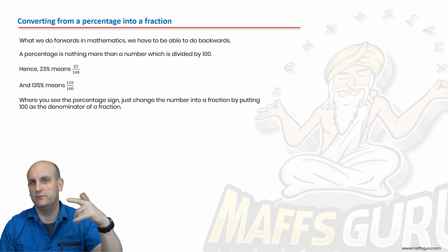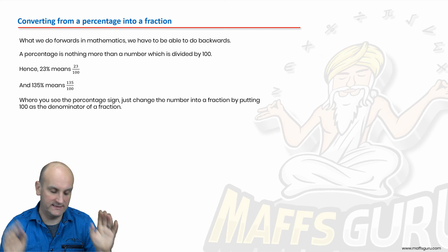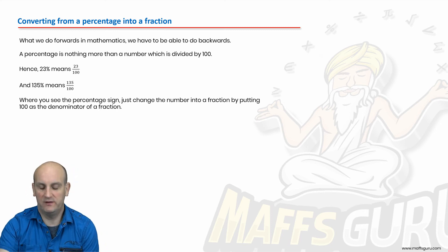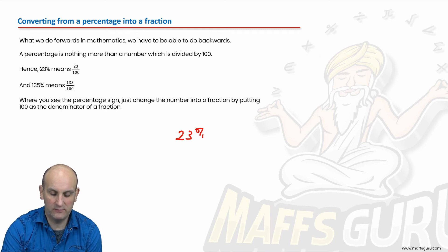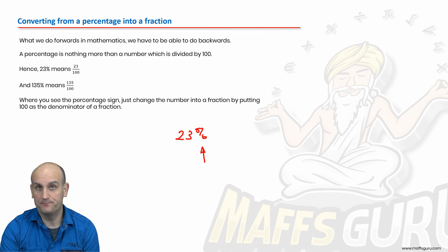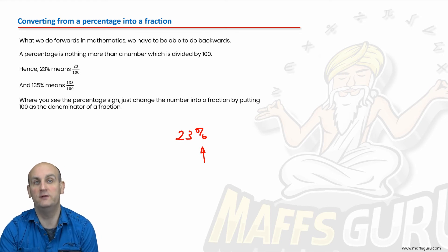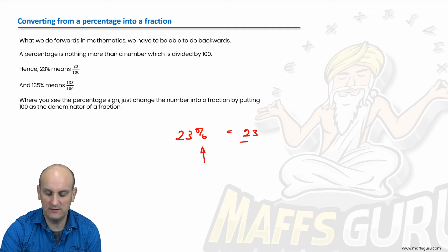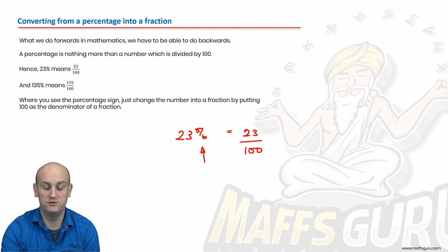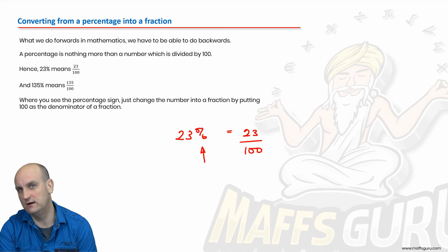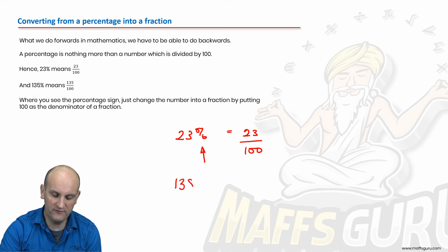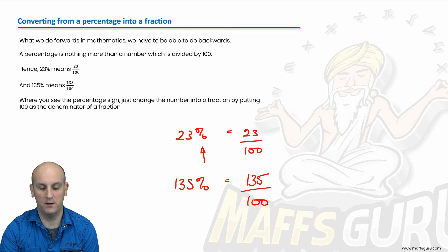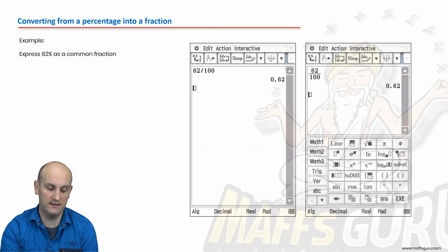Now what we do forwards in mathematics, we also need to do backwards. But we need to be able to do this stuff backwards. And what I'm saying is if we have 23%, what did I say the percent sign was? It's the same as having a denominator of 100 in a fraction. So that is exactly the same as 23 divided by 100. And ka-ching, I have just converted a percentage into a fraction. Now that may not be in its lowest form, but my calculator can help me with that in just a moment. So what about 135%? Well, that is now 135. And wherever I see the percent sign, I just do divide by 100. And again, ka-ching, there is my fraction. Now in that situation, yes, you can cancel that down, but maybe I would leave my calculator to do that.